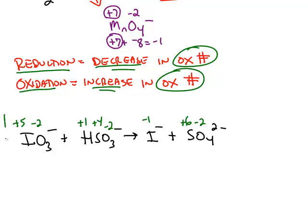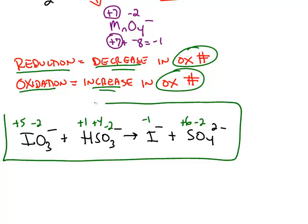Here's an unbalanced reaction where I've applied all the rules for assigning oxidation numbers from the last video. From those numbers we can figure out what's being oxidized and what's being reduced.